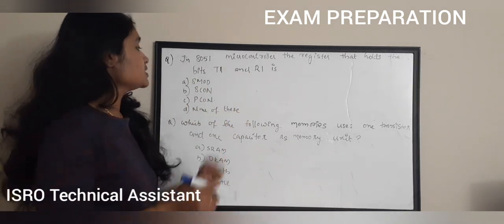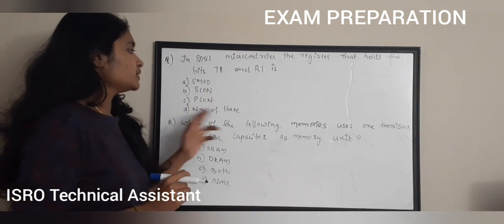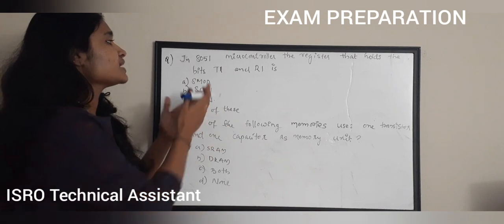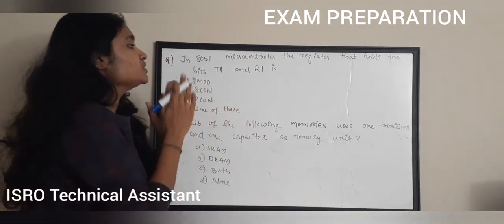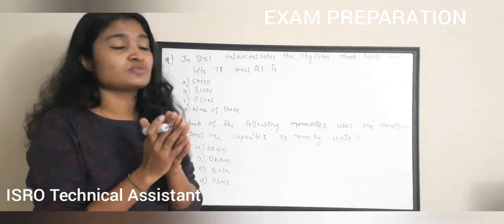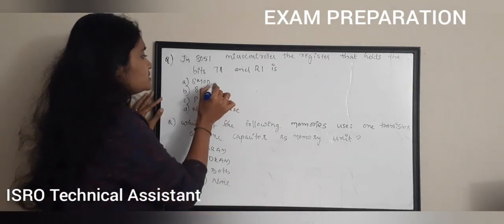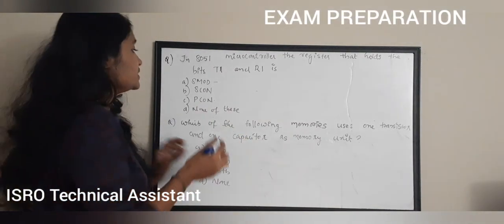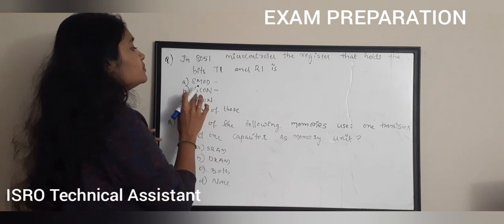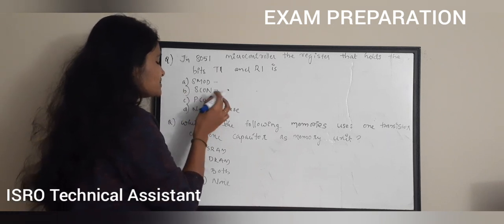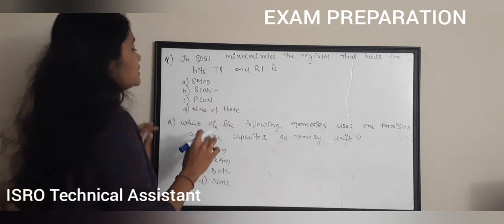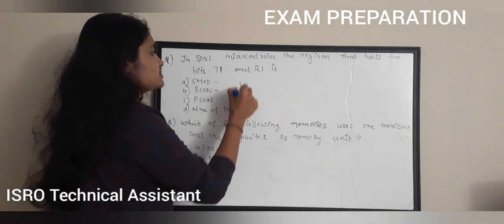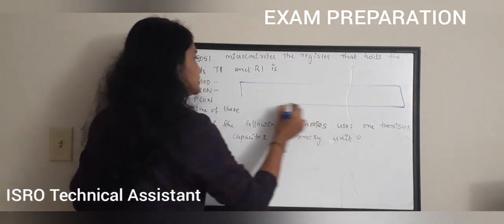In the 8051 microcontroller, which register holds the bits TI and RI? Options: SMOD, SCON, PCON, or none of these. These are control registers of the 8051. SMOD is used to set serial modes, SCON is the serial control register, and PCON is the power control register.